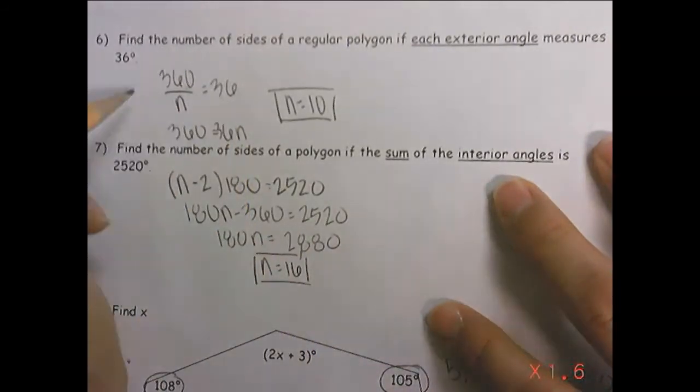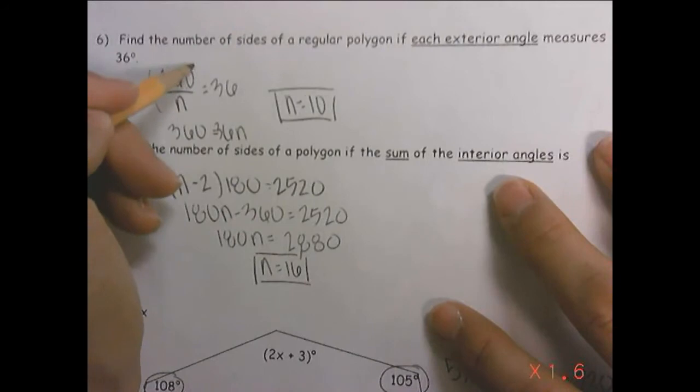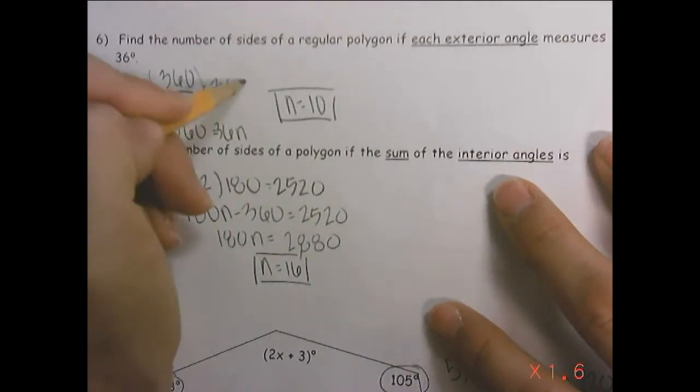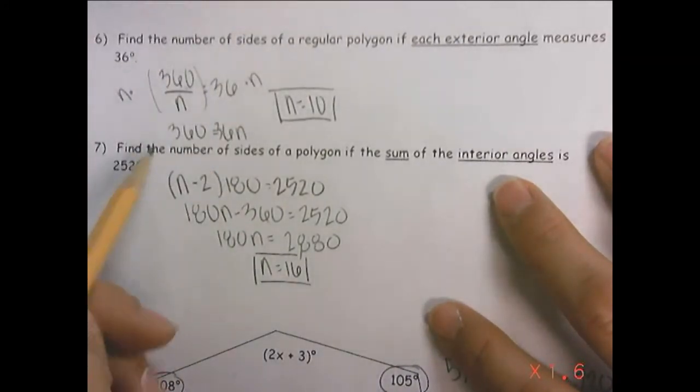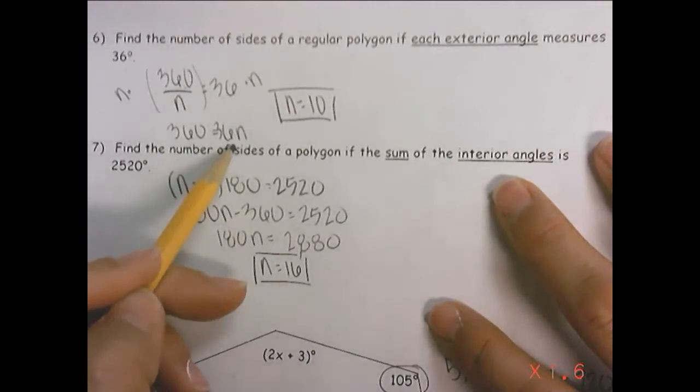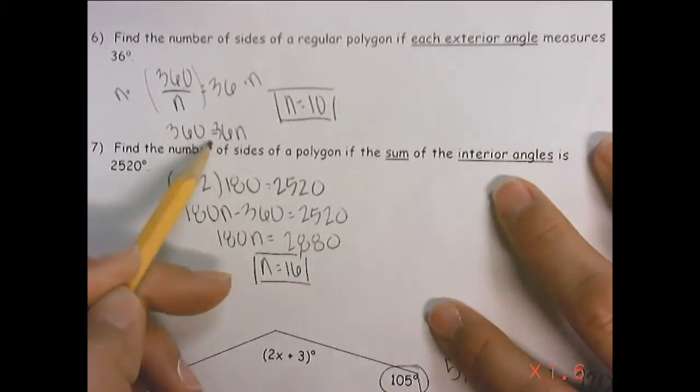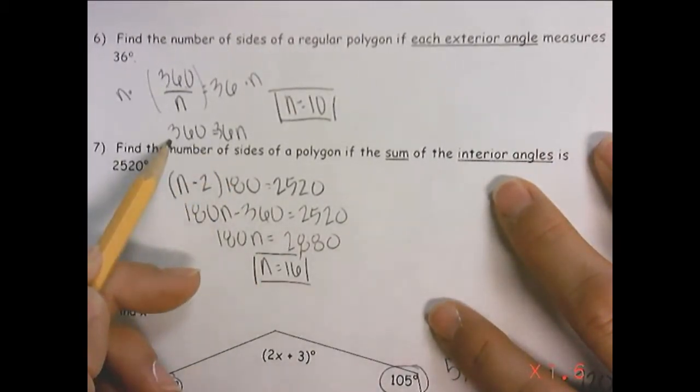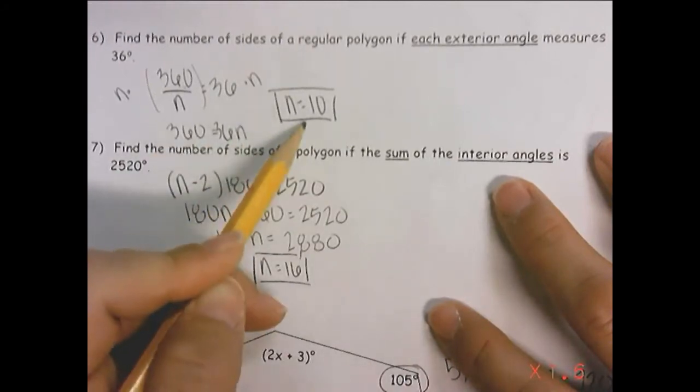So if you wanted to, I would multiply both sides by n, both sides by n, and end up with 360 equals 36n. Then divide by 36, divide by 36, and n would equal 10.